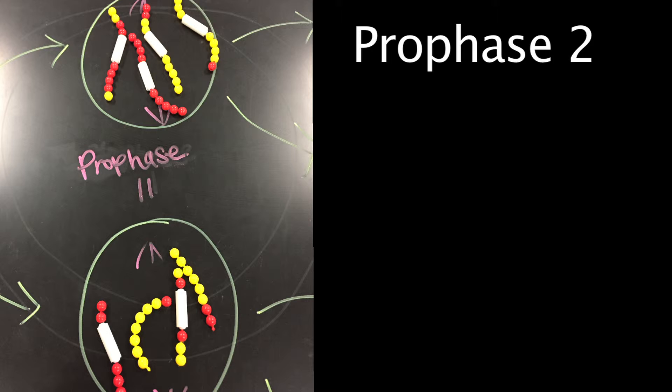Prophase 2 begins with two daughter cells produced by the first meiotic division. During prophase 2, nuclear envelopes, if they formed during telophase 1, dissolve and spindle fibers reform. As in prophase 1, the chromosomes are condensed. During this stage of spermatogenesis, the cells are called secondary spermatocytes, or during oogenesis, secondary oocytes.